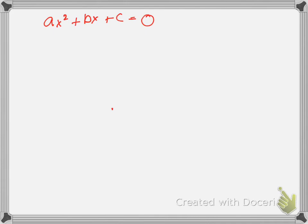What's the first step we do? We're going to subtract C, the constant term from both sides. AX squared plus BX equals negative C.